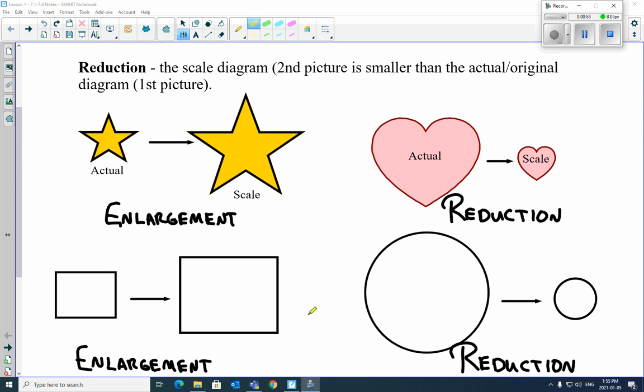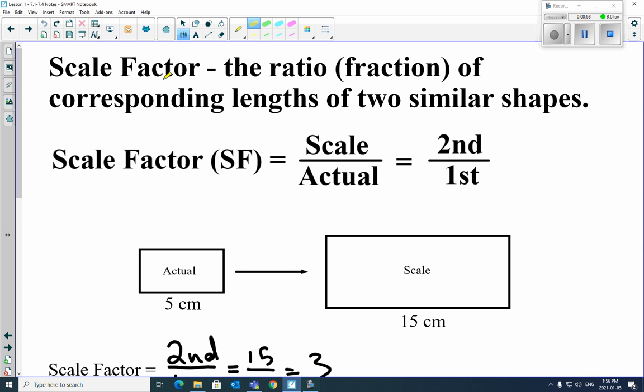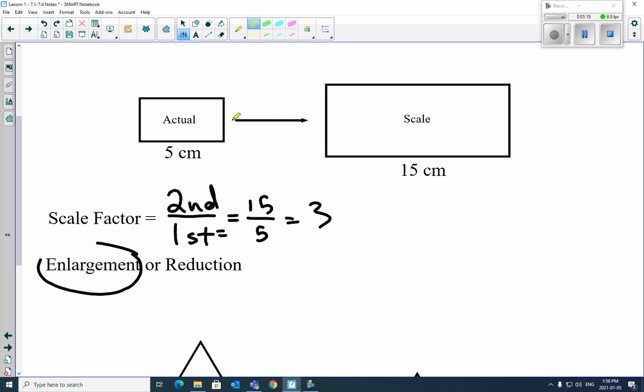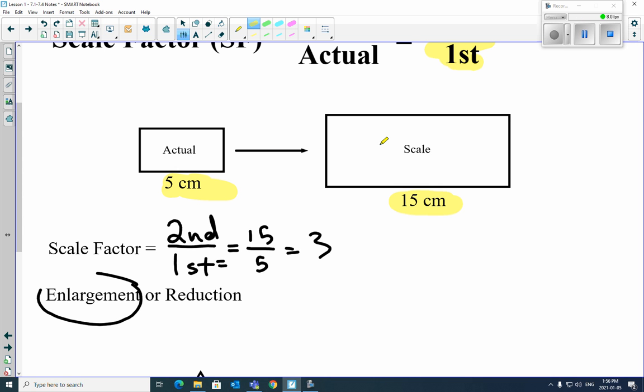And what we do is we actually assign a value to it. And the value is going to be what's known as scale factor. So you flip the page, you go to scale factor. Scale factor is just a number. It's a ratio, it's a fraction, it's a decimal, it's whatever you want it to be. And all it is, is the scale over the actual. So the easiest way to remember is the second measurement over the first measurement. So let's take a look at this first one. We can see the actual, and it's going to a scale. So it's going from smaller to larger, so it's an enlargement. So what we do is we take the second measurement, which is 15 centimeters, and divide it by 5 centimeters. So 15 divided by 5 gives us 3. So what we could say is this scale diagram is 3 times the size of the actual, and that would be an enlargement.